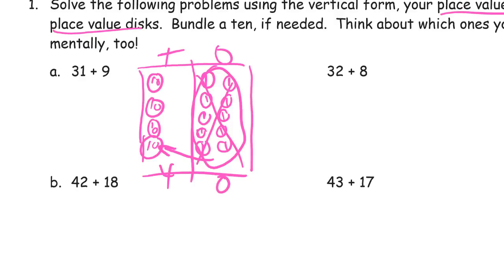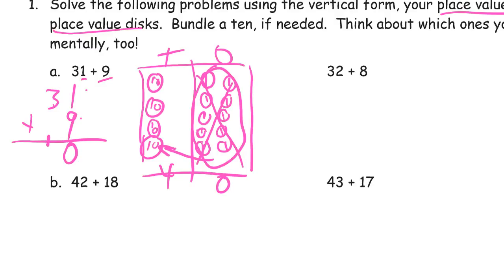The vertical method: 31 plus 9. Make sure you're adding your ones to your ones and your tens to your tens — the one and the nine should line up on top of each other, and the three tens should be by itself. So this is what you want it to look like: one plus nine is ten, there are zero ones left over, and there's one ten — three plus one is four, forty.